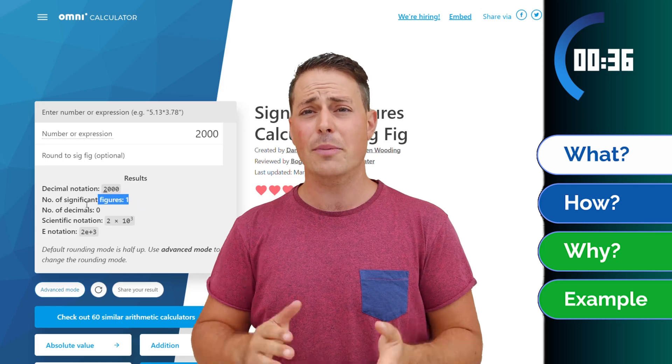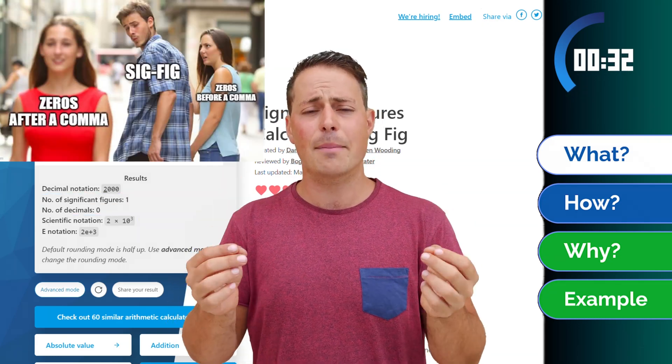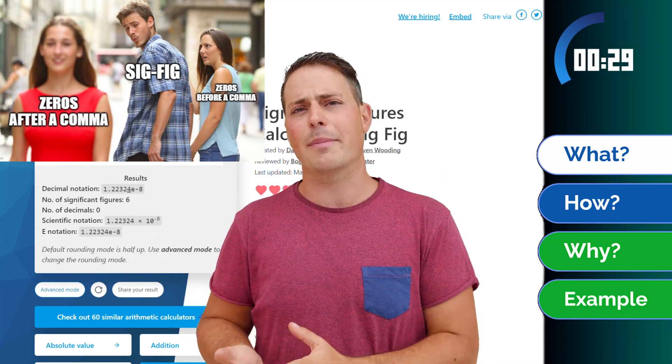2000 has only one significant figure, because 2000 and 2 times 10 to the power of 3 is the same number just in scientific notation, so the zeros don't really matter here.